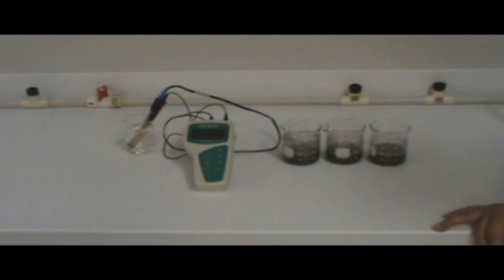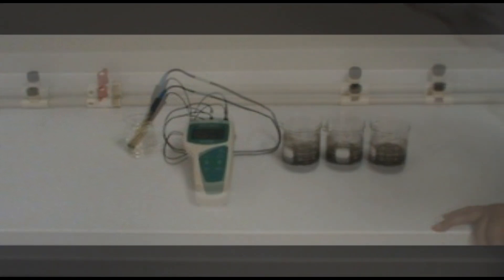you will then require your pH meter, double junction electrode, and ATC probe. Make sure that the meter and electrode are properly calibrated in accordance with the procedure listed in the meter's manual. For time purposes, the pH meter and electrode being used have already been calibrated.